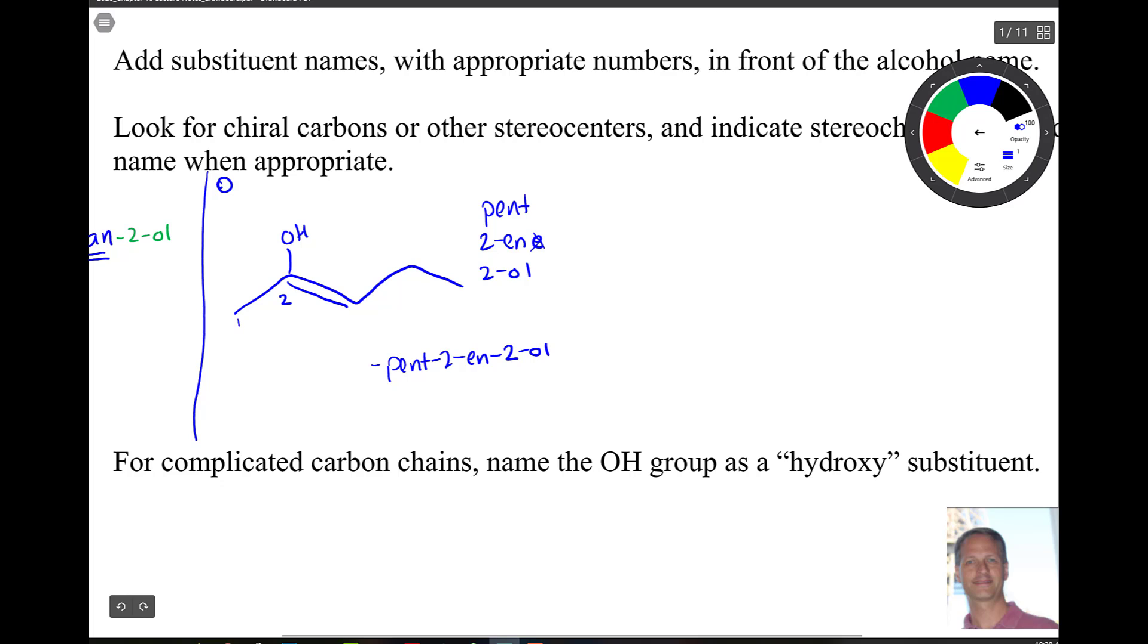And we're not done yet because we now need to figure out stereochemistry. Now, there's no R and S here, but there's E and Z to consider. So that's your number one. And then over here, that's your number one. So they're on the Zeus-Samen side, if you remember that, same side. So it's a Z.